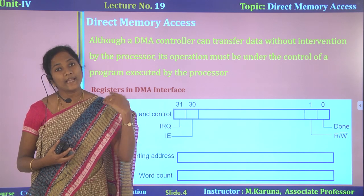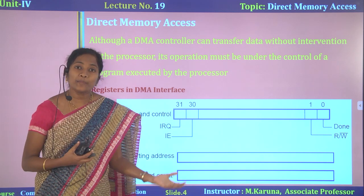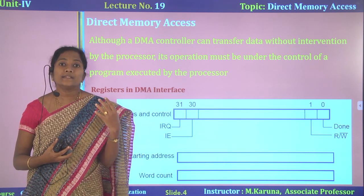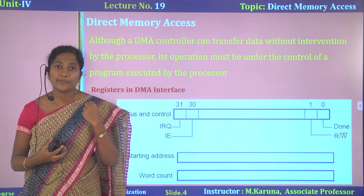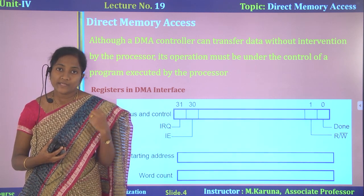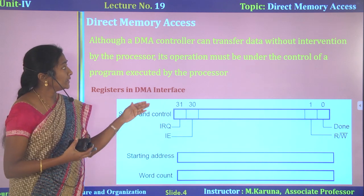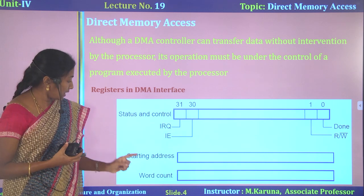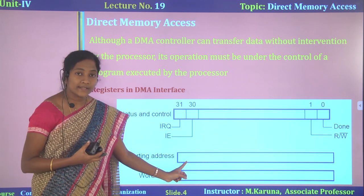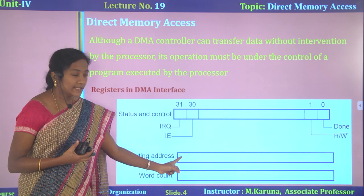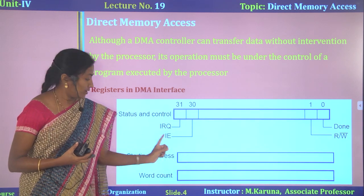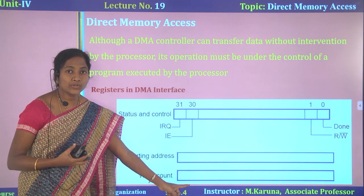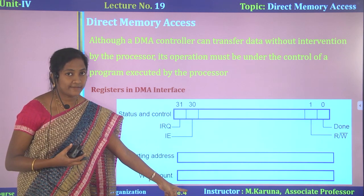Meanwhile, the processor performs another operation. After completion of the data transfer operation, the DMA sends an acknowledgement signal — that is, an interrupt signal — to the processor. Now, the registers available in the DMA controller: the starting address register is used to store the starting address of the word to be transferred, and the word count register is used to store the number of words to be transferred.